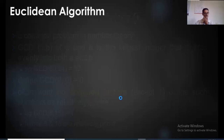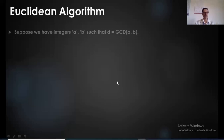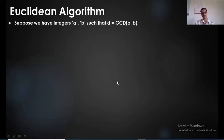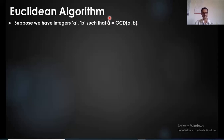Now coming to the Euclidean algorithm. Let us say we have two numbers A and B — two integers — and let us consider D as the GCD of A and B, the greatest common divisor. We want to find this D by using the Euclidean algorithm.